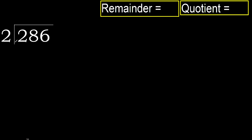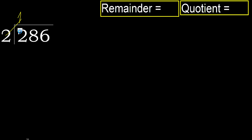286 divided by 2. 2 is not less, therefore with 2. 2 multiplied by which number is nearest but not greater? 2 multiplied by 2 is 4, which is greater. 2 multiplied by 1 is 2, which is not greater. Ok, 2 minus 2 is 0. Next.